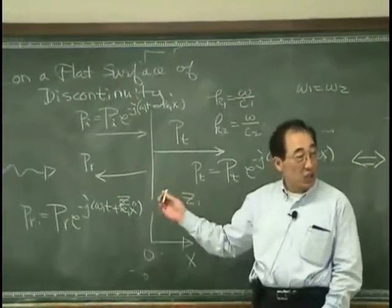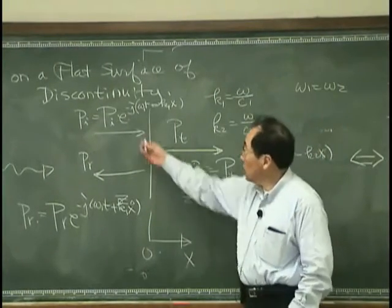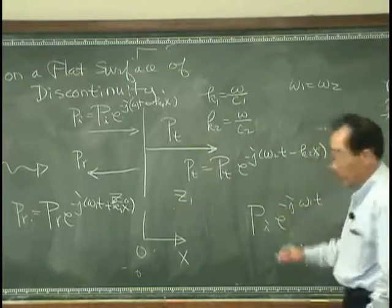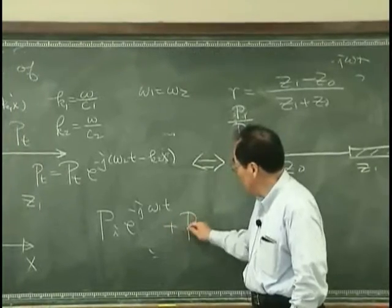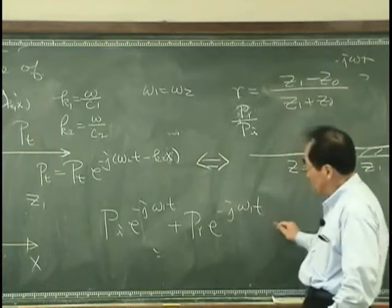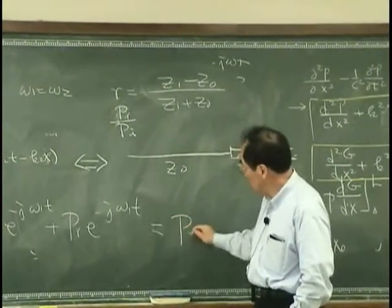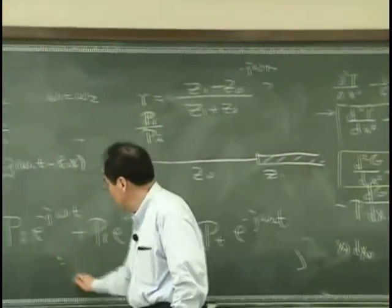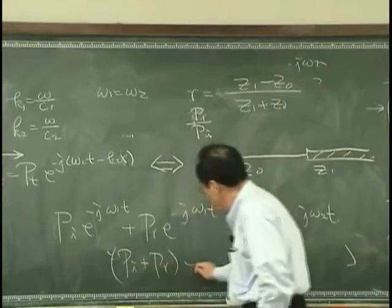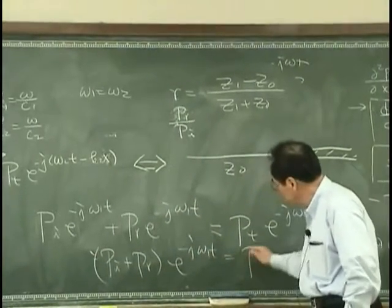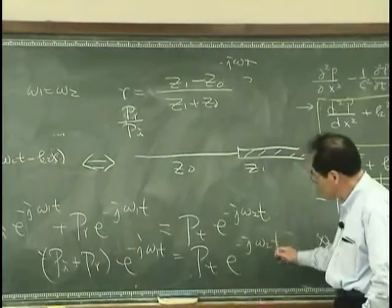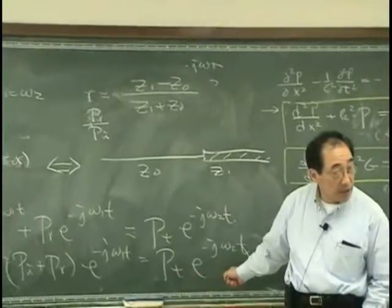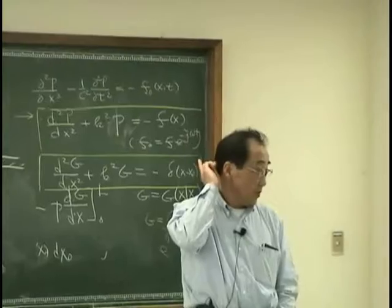The pressure at x equal to 0 has to be the same—continuous, right? The pressure due to pi is pi exponential j omega 1 t, and pressure reflected wave, that has to be same as pressure transmitted wave. And then that is pi plus pr. And I can say this one has to be same as this and this one has to be same as this. Therefore, omega 1 has to be same as omega 2.